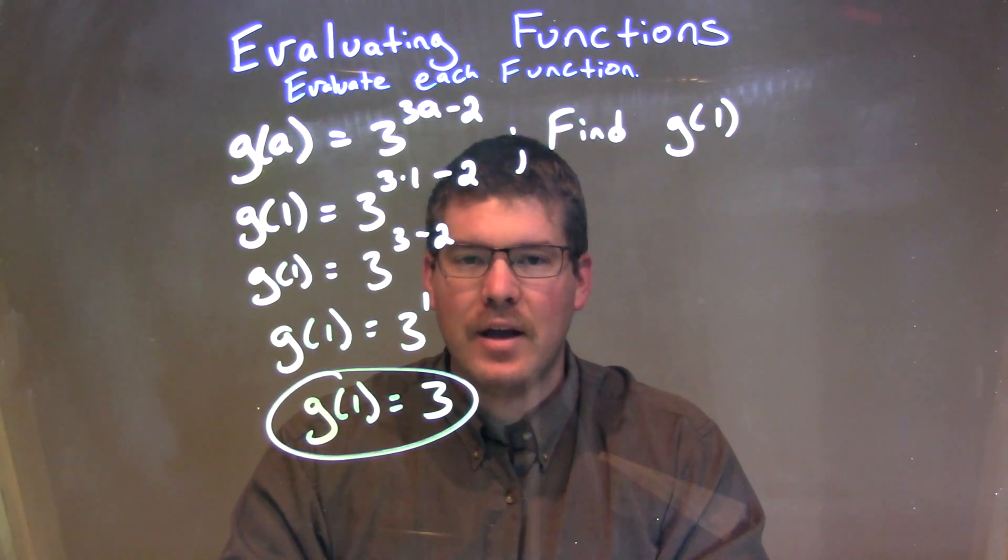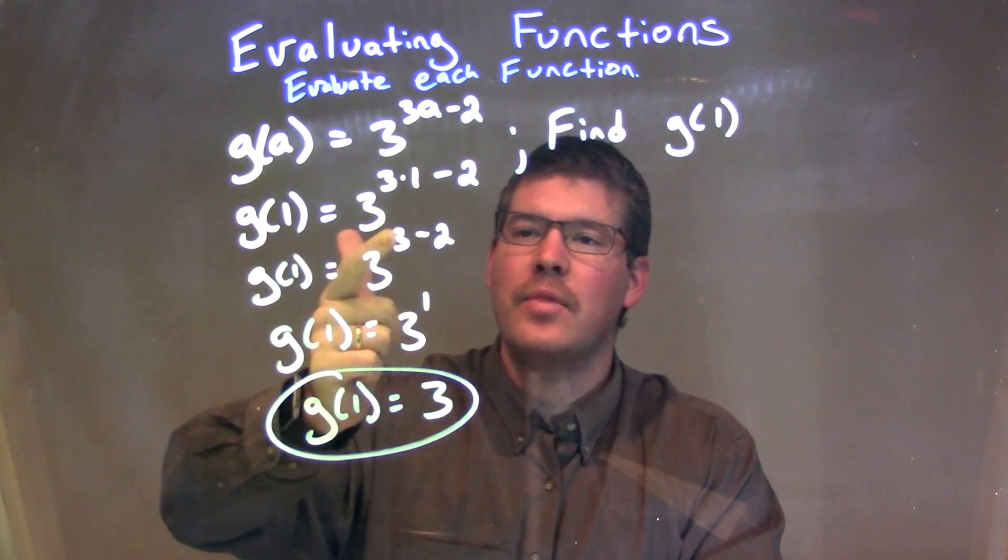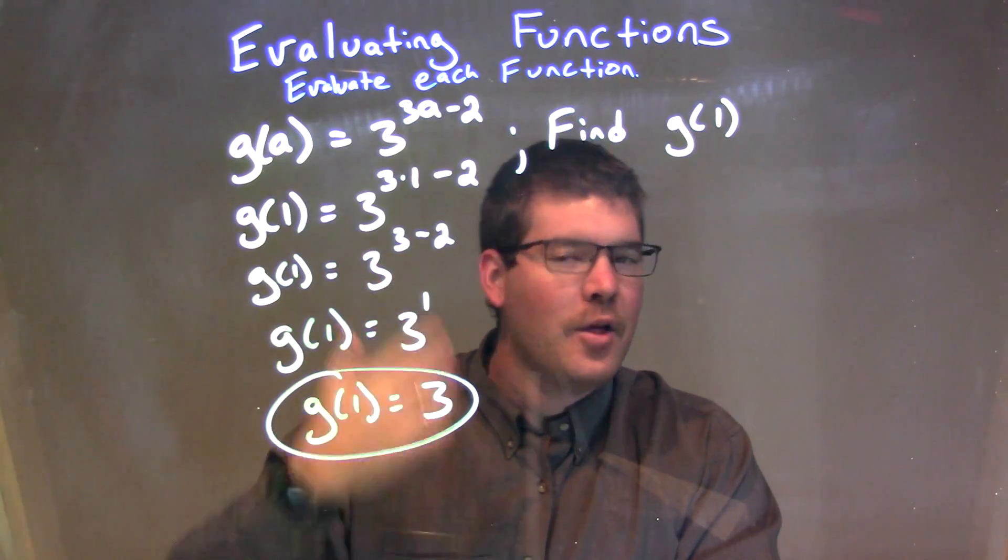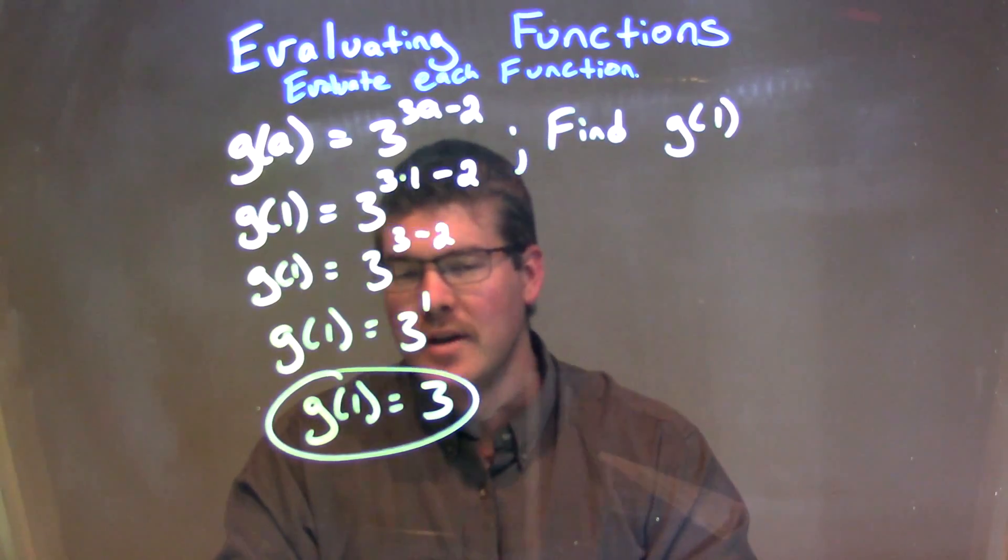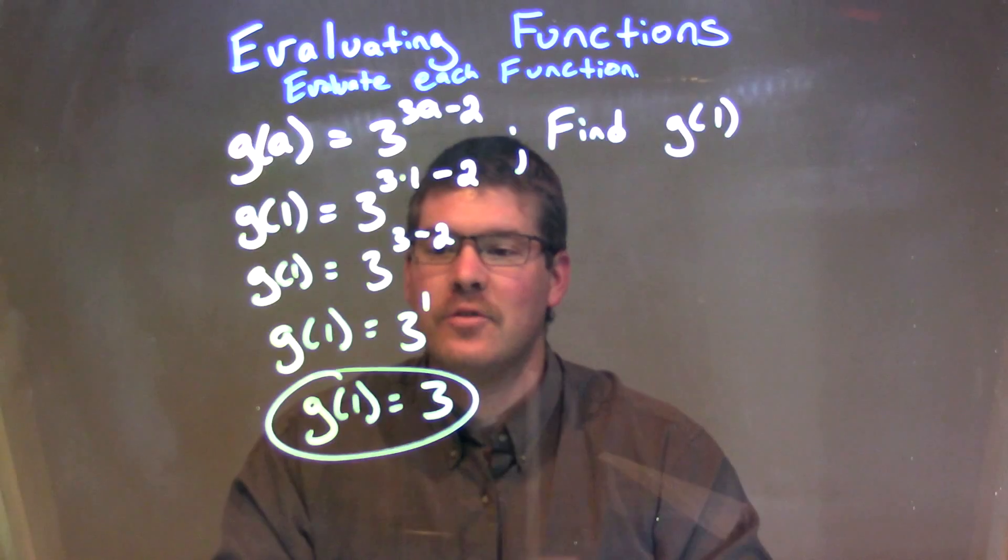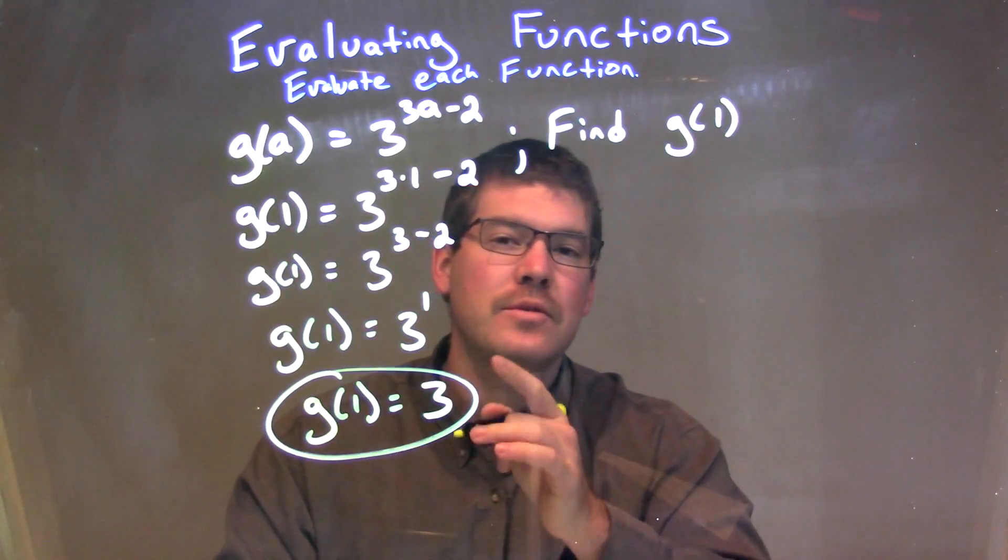I simplified the exponent there. 3 times 1 was 3, and 3 minus 2 was 1. 3 to the 1st power is just 3. So again, our final answer here is just g of 1 is equal to 3.